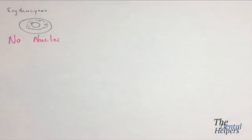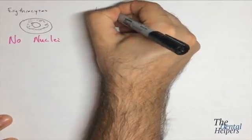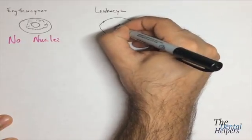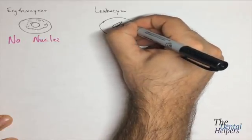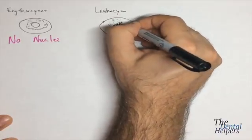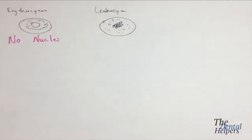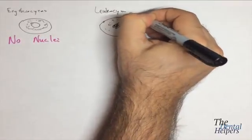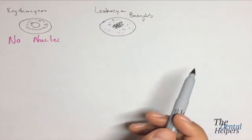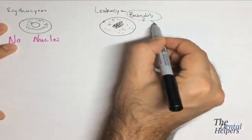Then you have your leukocytes, which are going to look almost like two sausages on a plate, and they're going to have a lot of dots all over the place. And so this is actually, sorry, your basophils. But under your leukocytes, you have your neutrophils, your eosinophils, your lymphocytes, your monocytes, and your basophils. And this guy right here that I've drawn is your basophil.